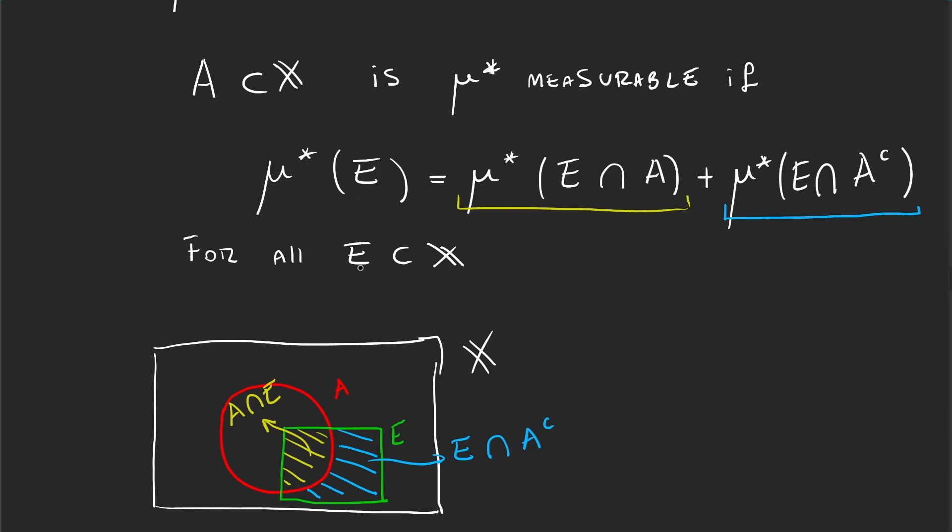So this definition is very intuitive. And now something important to notice is whenever a set satisfies this, the set that's measurable is A, not E. So A is μ* measurable if this condition is satisfied for all E subsets of X.